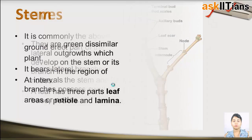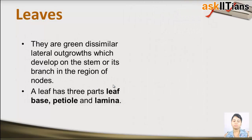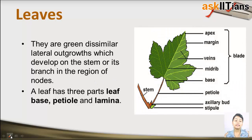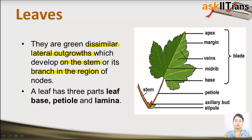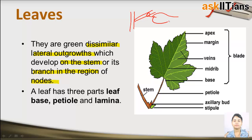The next organ of the flowering plant is leaf. Leaves are green in color due to the presence of chlorophyll, for the process of photosynthesis. Leaves are dissimilar in structure — it is not compulsory that all leaves be similar. A leaf is a lateral outgrowth that develops on the stem, from the region of nodes.